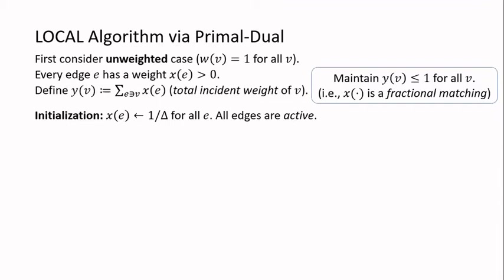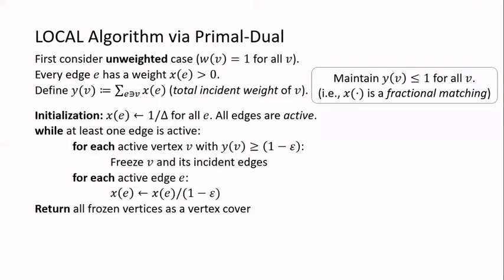Then we gradually increase the weights of the edges while maintaining the fractional matching property. In each round, we first check all active vertices v. If y(v) is at least 1 minus epsilon, meaning the constraint for vertex v is almost tight, then we freeze v and all its incident edges, and their edge weights will never change again. Then for all active edges e, we increase their weights by an epsilon factor. We repeatedly do this until none of the edges are active, meaning every edge has at least one frozen endpoint.